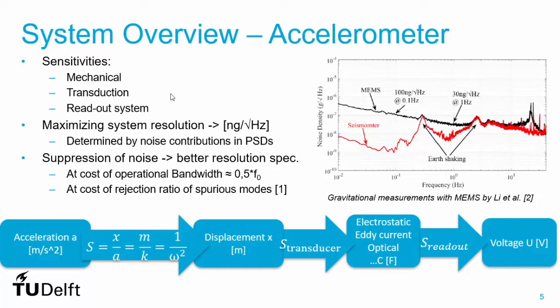On the right-hand side you can see a measurement shown in literature where a MEMS gravimeter or accelerometer is compared with a commercial seismometer, and we can see that the spectrum of interest is in the order of only a few hertz.